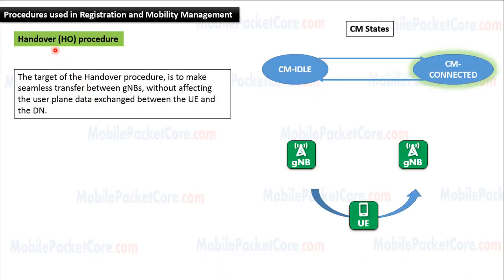Now let's learn the Handover Procedure. The Handover Procedure is used when the UE is in CM connected state. While the UE is in CM connected state and moves from one gNodeB to another gNodeB, the UE shall initiate the Handover Procedure. The target of the Handover Procedure is to make seamless transfer between gNodeBs without affecting the user plane data exchanged between the UE and the data network.